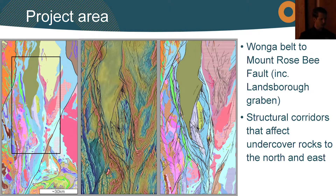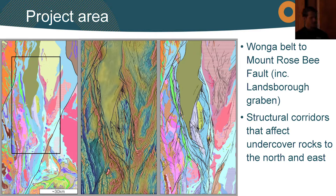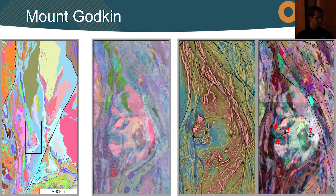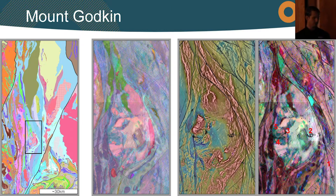I should mention that a lot of the detailed structure that comes out of this higher resolution data is quite spectacular. We've recognized that a lot of these corridors are quite high strain zones - there's not a lot of simple modified stratigraphic contacts and not a lot of simple contact relationships through there.